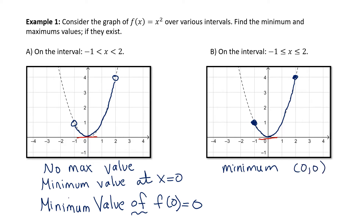The x portion of the ordered pair tells you where the minimum occurs, and the y portion tells you what the minimum value is. Because the endpoints are included, we also have a maximum — and that maximum is at the right endpoint, the ordered pair (2, 4).